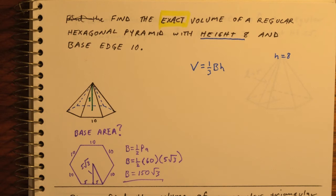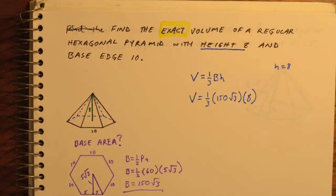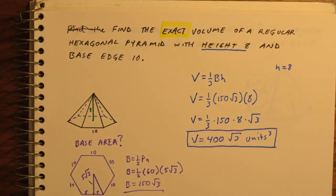Now I have everything I need to find the volume of the pyramid. Volume is 1/3 times base, which is 150 root 3, times height, which is 8. I can multiply in any order I choose. I'm going to multiply 1/3 times 150 times 8 first, then I'll tack on that root 3 at the end. So I have an exact volume of 400 root 3 cubic units.